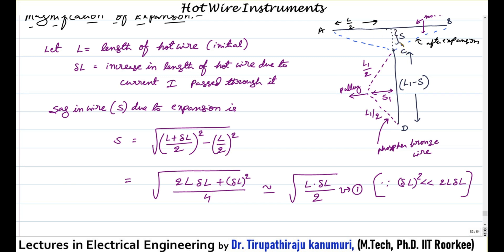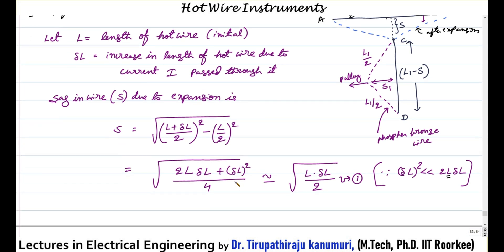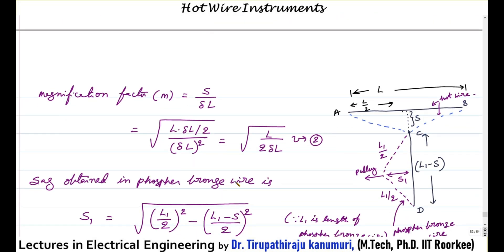From the right angle triangle we can calculate the sag. When simplified, it becomes 2L delta L plus delta L squared divided by 4, which is approximately equal to L times delta L divided by 2, since delta L squared is far less than 2 times delta L when compared to the original length L. Now, whatever small sag is coming, we want to further magnify it.